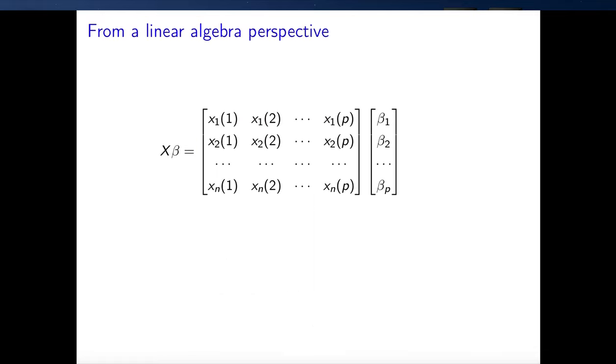If we look at the response estimates for our training data and also our test data — which is Tennessee — we get a pretty reasonable fit, especially taking into account that we only have two features. The estimate for the GDP of Tennessee is actually not that far, so here we have a reasonable estimate.